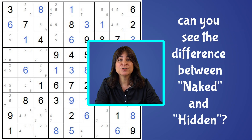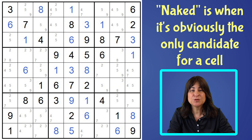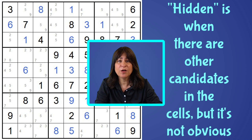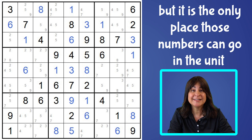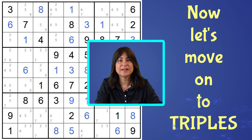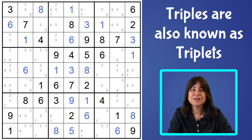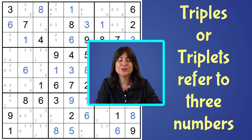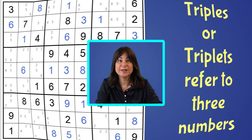So at this point it should be obvious what the difference is between the terms naked and hidden. Naked is when it's obviously the only candidate for a cell. Hidden is when there are other candidates for that cell and it's hiding amongst those candidates, but it's the only place those numbers can go. Now let's move on to triples. Just like pairs or twins mean two numbers, triples or triplets mean three numbers.